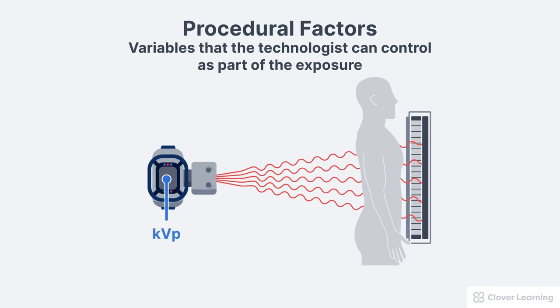The operator's choice of KVP, collimation, and grid ratio all have an effect on image contrast.